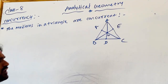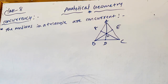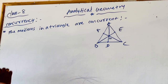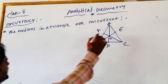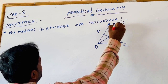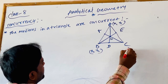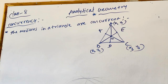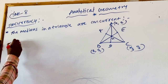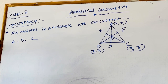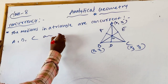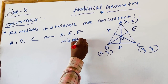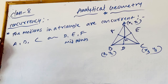Let A = (X1, Y1), B = (X2, Y2), C = (X3, Y3) be the vertices of the triangle. Then A, B, C are the vertices and D, E, F are the midpoints of the three sides of the triangle.